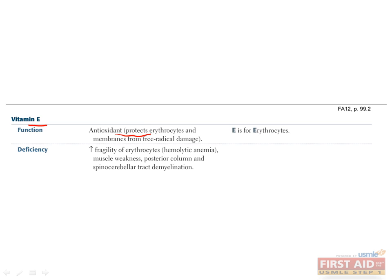Its antioxidant property allows it to protect erythrocytes from free radical damage, so its deficiency can lead to increased fragility of erythrocytes, which in turn causes hemolytic anemia. Other signs of vitamin E deficiency include muscle weakness and posterior column and spinocerebellar tract demyelination. Additionally, excess of vitamin E can interfere with vitamin K metabolism.